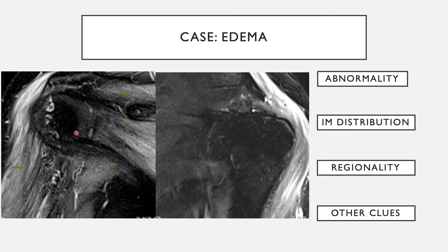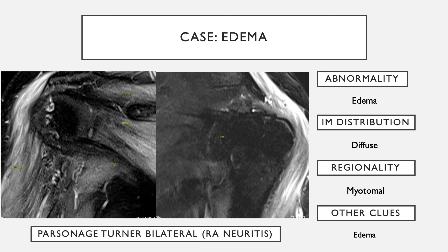In contrast, another case shows diffuse shoulder muscle edema involving all muscles of the upper extremity bilaterally — the supra- and infraspinatus and all muscles. When you have bilateral edema in this situation, one thinks more likely of a diffuse neuropathic event. This was bilateral Parsonage-Turner syndrome from rheumatoid arthritis-related neuritis. When you see diffuse muscle edema affecting multiple muscles involving an entire extremity, start to think of a more proximal cause for denervation.